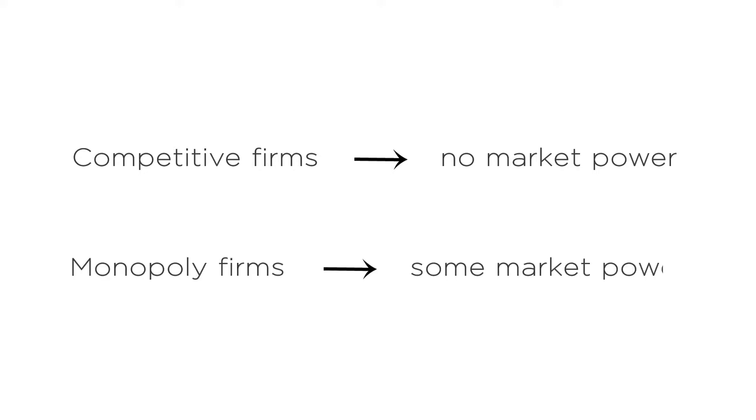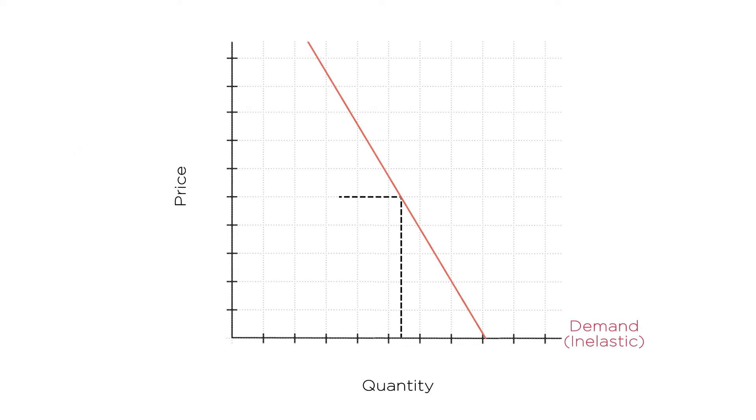Monopoly firms have some market power, but this power is not unlimited. Monopoly's can set a price higher than marginal cost, but only to the extent that consumers don't choose to leave that market entirely. And that extent is determined by the demand elasticity for the good. So market power is higher the more inelastic the demand for the good.